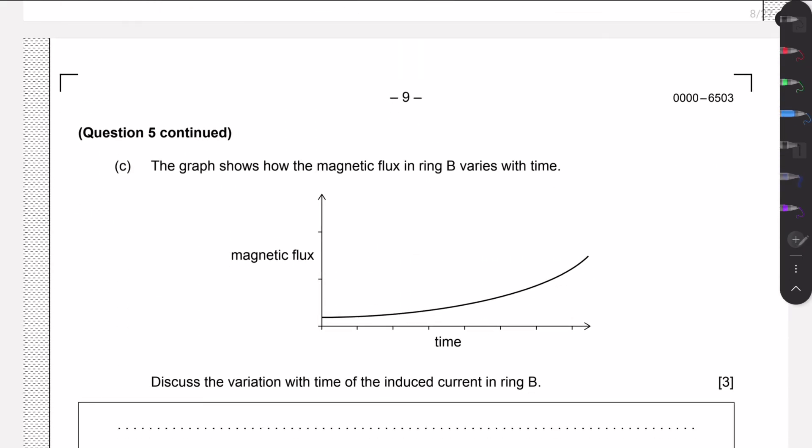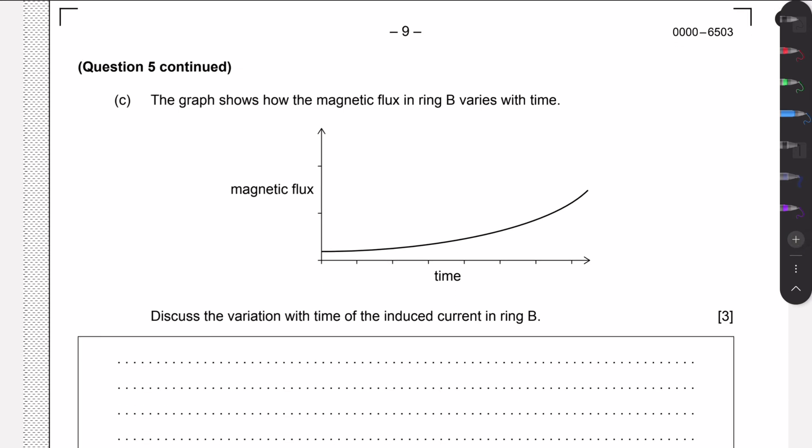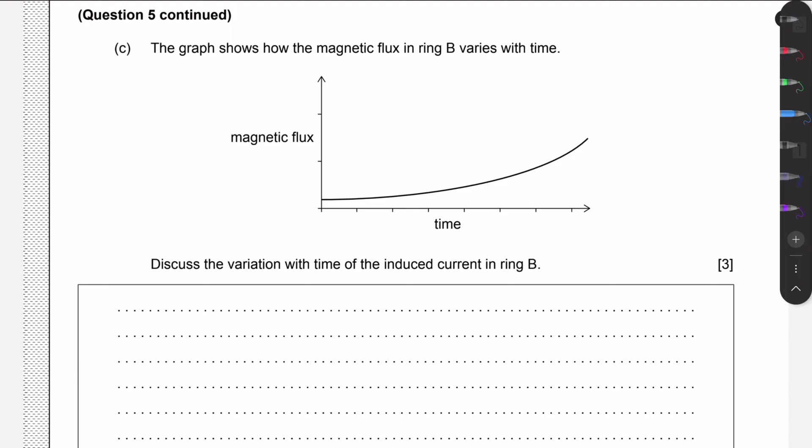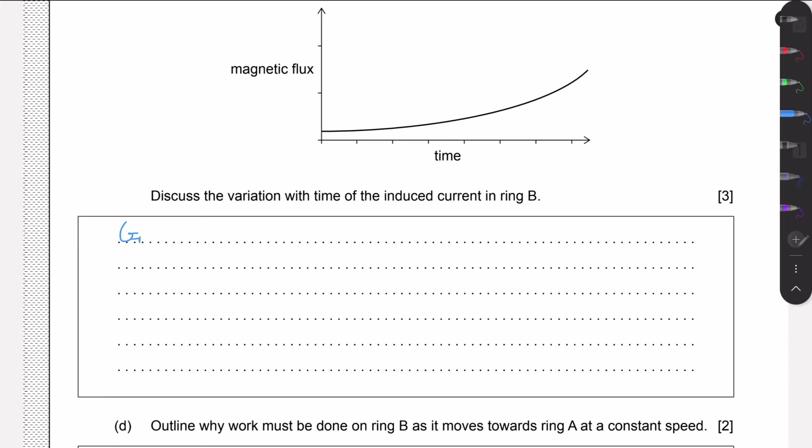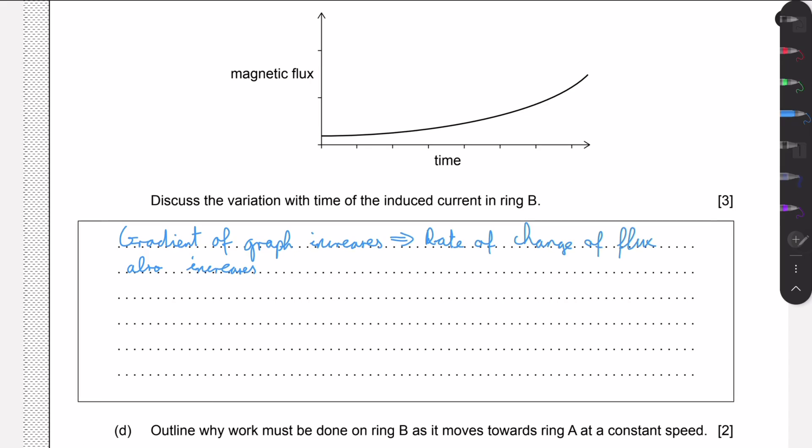And then we're given this graph of magnetic flux versus time in ring B, and we need to discuss the variation with time of the induced current in ring B. So what we can see is that the gradient of our graph is increasing. So our gradient increases, that means that the rate of change of flux also increases.